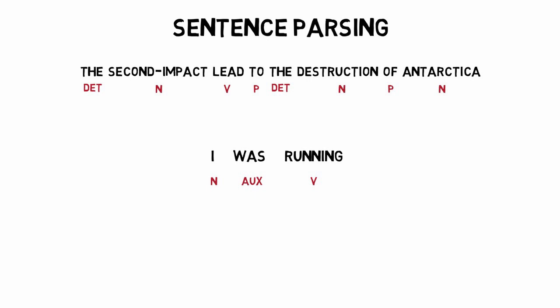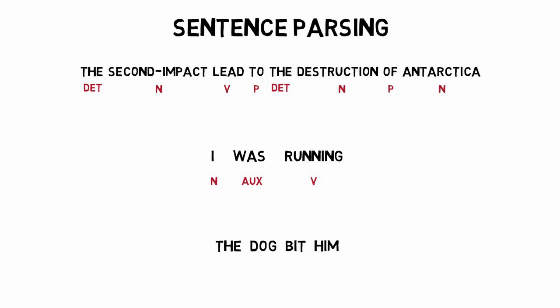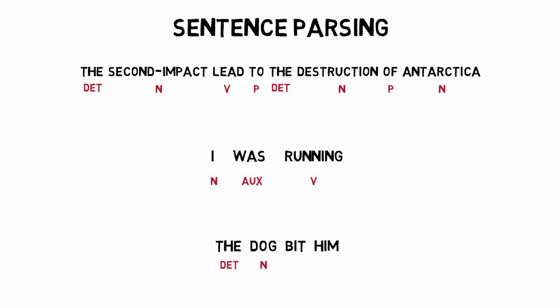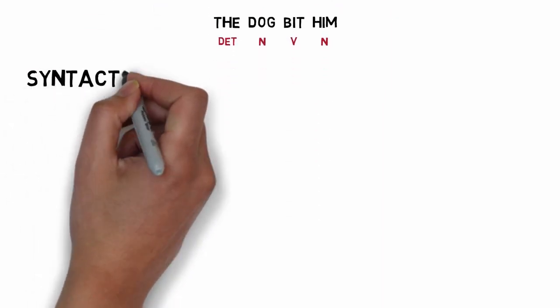Another example: 'The dog bit him.' 'The' is a determiner specifying the noun 'dog.' 'Dog' is a stereotypical noun. 'Bit' is the past tense of 'bite' and is an action word, so we call it a verb. 'Him' is a pronoun — we'll call it a noun. Sticking with this example, we can now talk about syntactic roles: how different words behave in a sentence in a structural sense.